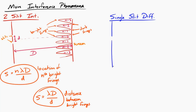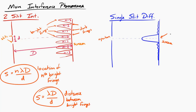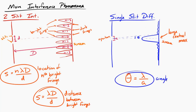For single-slit diffraction, we have light passing through a single aperture and then it projects on a screen. When we do that, it creates a pattern with a large central maximum and then smaller light and dark fringes on the outside. We have an equation: theta is equal to lambda over a. That tells us the angle to the first dark spot, to the first minimum. And a is the width of the aperture in that equation.